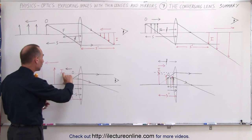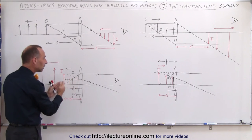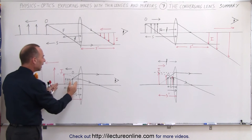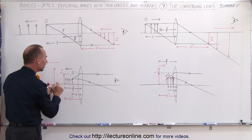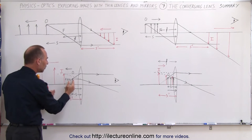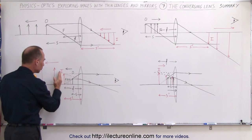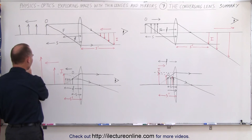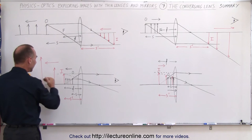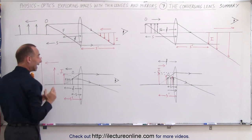Initially, we had an image forming over here. It was a virtual image because it formed in front of the lens. As we brought the object closer and closer to the focal point, the image would form farther and farther away. The image is upright and became larger and larger.